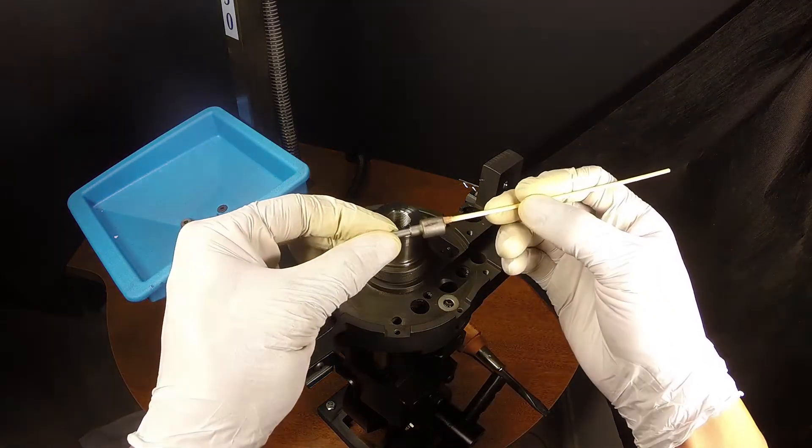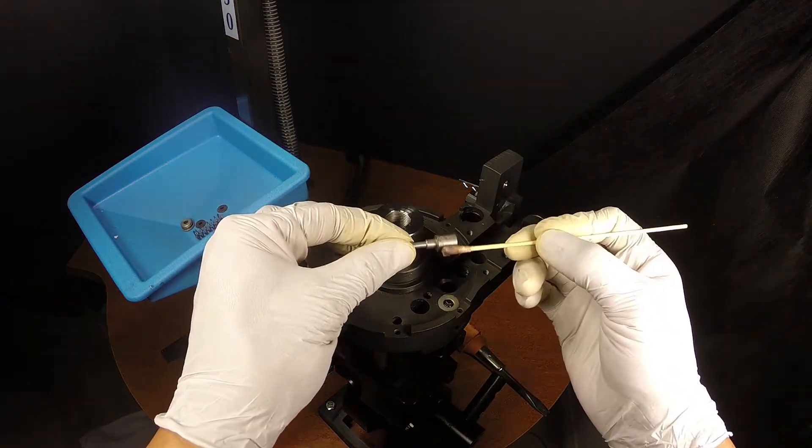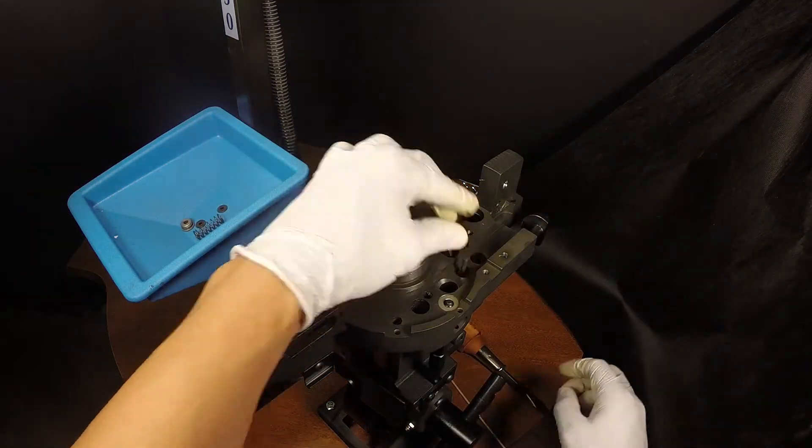Prior to installation, lube the base of the primer punch. Now adjust the primer punch until it is flush with the bushing.